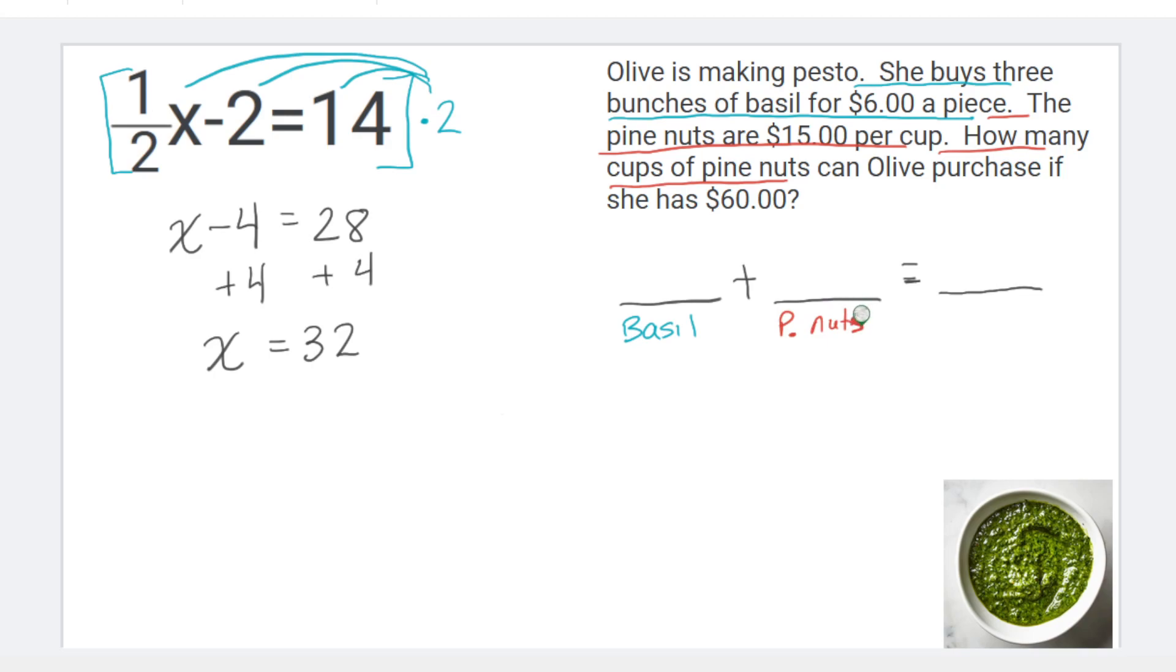Everything that I know about pine nuts is going to go right here. And then in this last blank, we're going to have whatever total we have. The total is the easy one. We see that she has $60, so we're going to put $60 in that space.